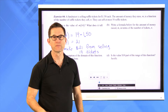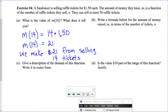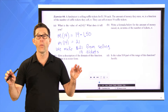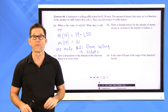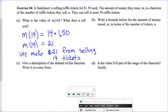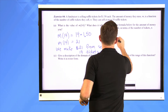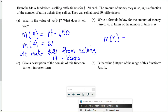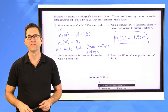Letter B: write a formula for M in terms of N. It's straightforward: take the price of a single ticket, $1.50, and multiply by the number of tickets sold. So M of N equals 1.5 times N. That's the function using function notation — it tells us how much money we raise if we sell N tickets.